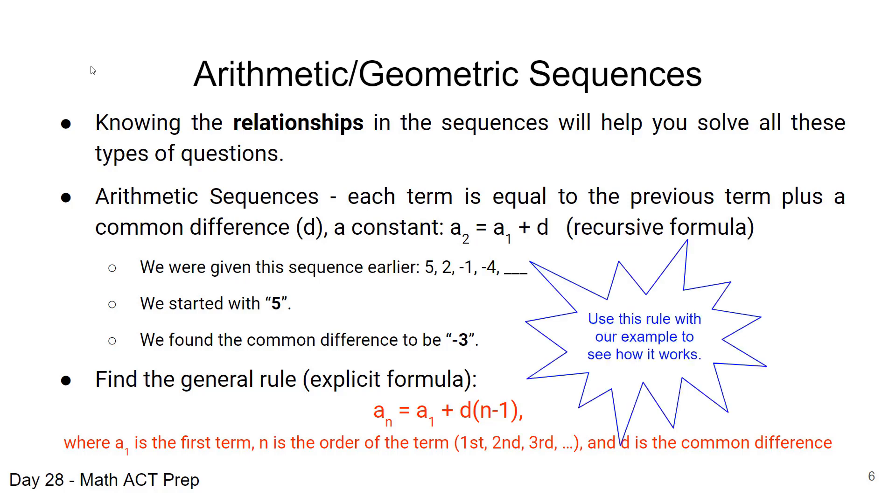So let's take this explicit formula that we've just derived and let's use it with the example problem we were looking at earlier, where we were looking for the fifth term in the sequence. So we say a sub 5 is what we're looking for and what we do is we took our initial value which was 5, we're going to add to that our common difference which we found to be negative 3 and multiply that by n minus 1, 5 minus 1 which is 4.